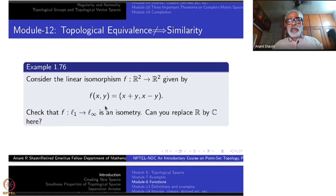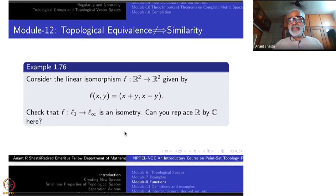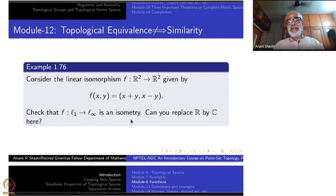The L1 norm is |x| + |y|. If both x and y are positive, the maximum of |x+y| and |x−y| will be |x+y|. If one of them is positive and one negative, then the maximum will differ, and if both are negative, again this will be the maximum. So the maximum always equals the sum |x| + |y|. Therefore this is an isometry.